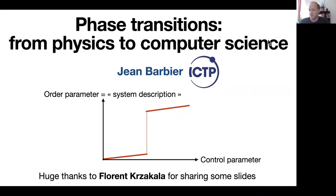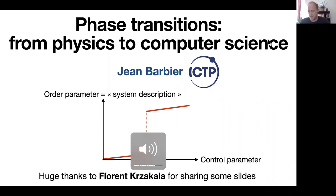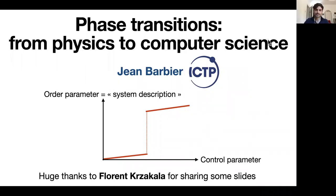This is Jean Barbier from ICTP. He has been with us since 2019 in the quantitative life sciences section, doing research in statistical physics with connections to statistical inference, computer science, and machine learning. Today he will talk about phase transitions from physics to computer science.